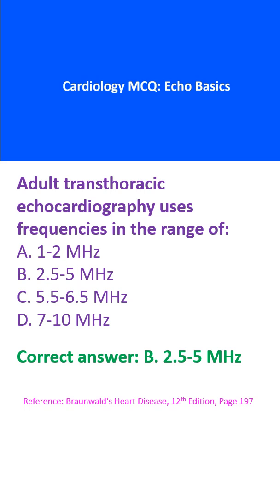Adult transthoracic echocardiography uses frequencies in the range of: a. 1 to 2 MHz, b. 2.5 to 5 MHz, c. 5.5 to 6.5 MHz, d. 7 to 10 MHz. The correct answer is b. 2.5 to 5 MHz.